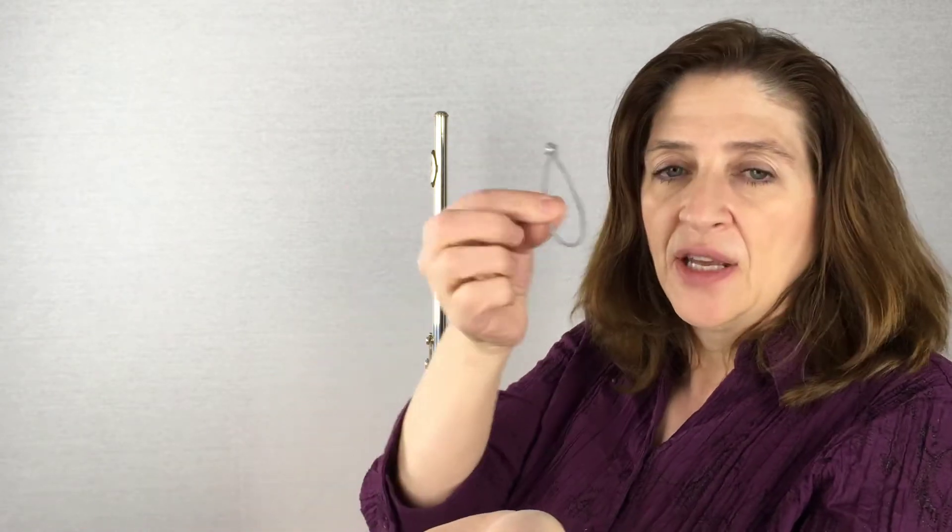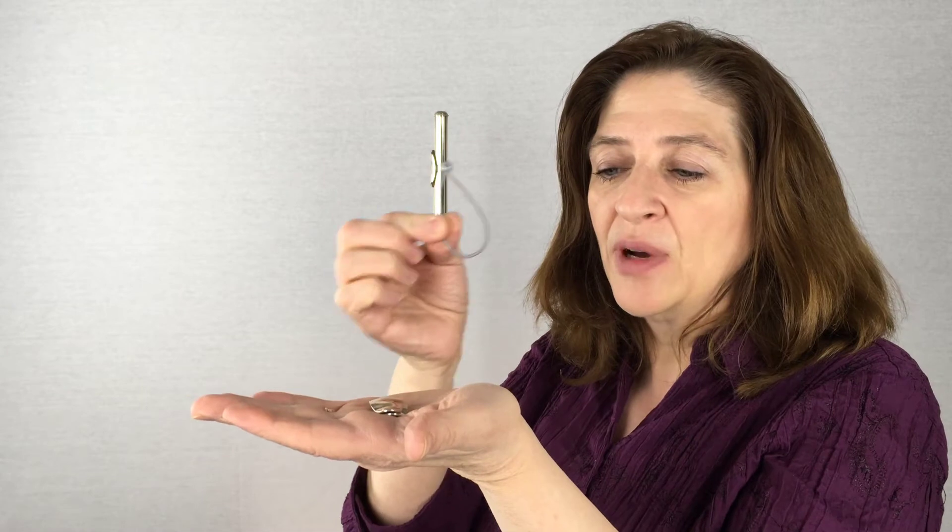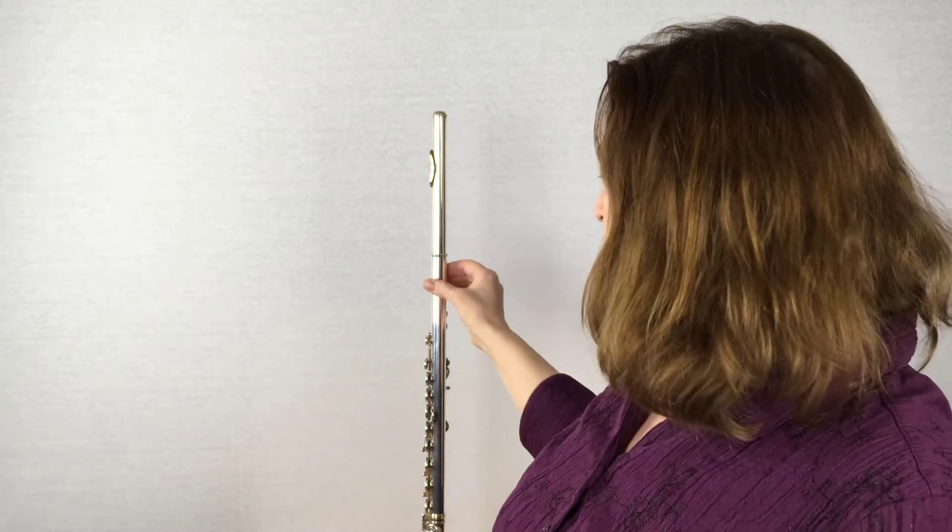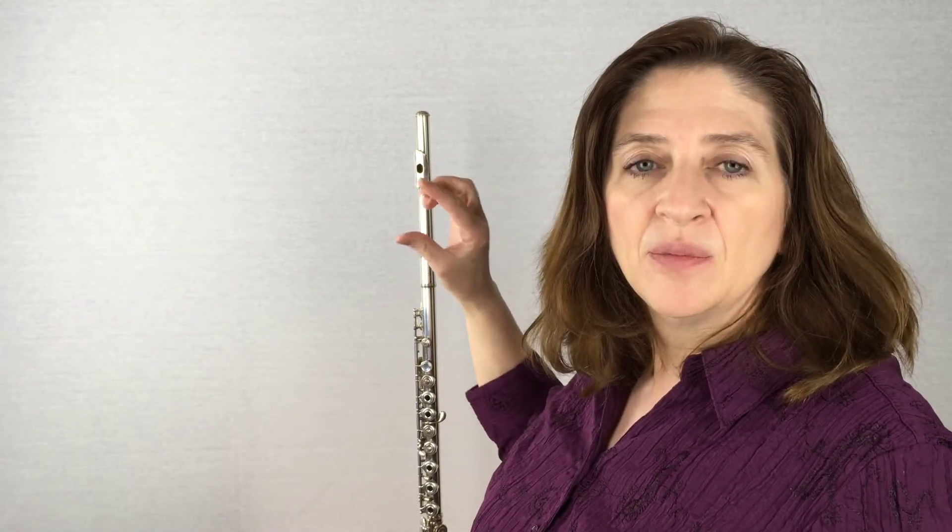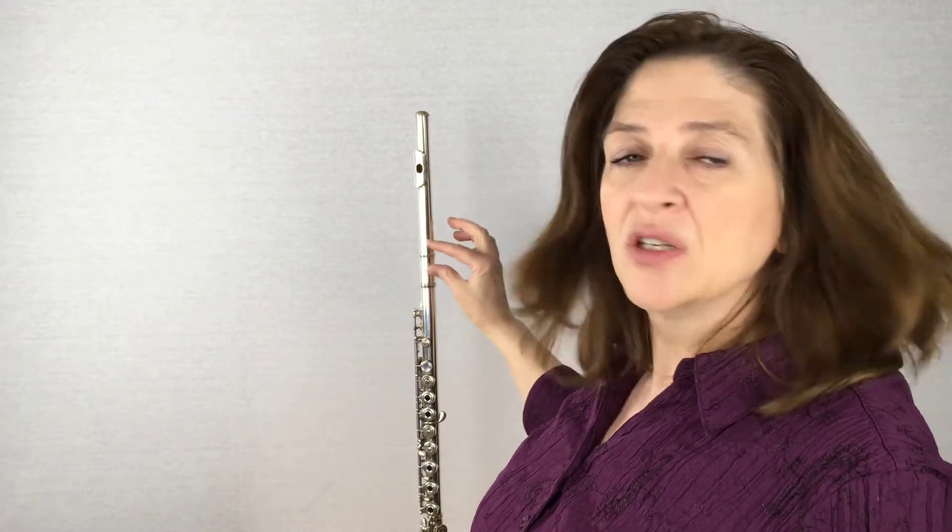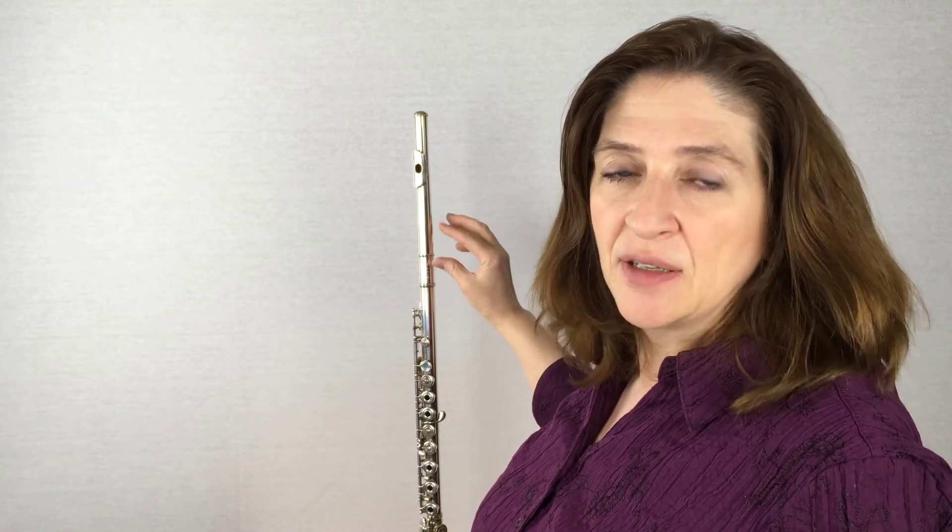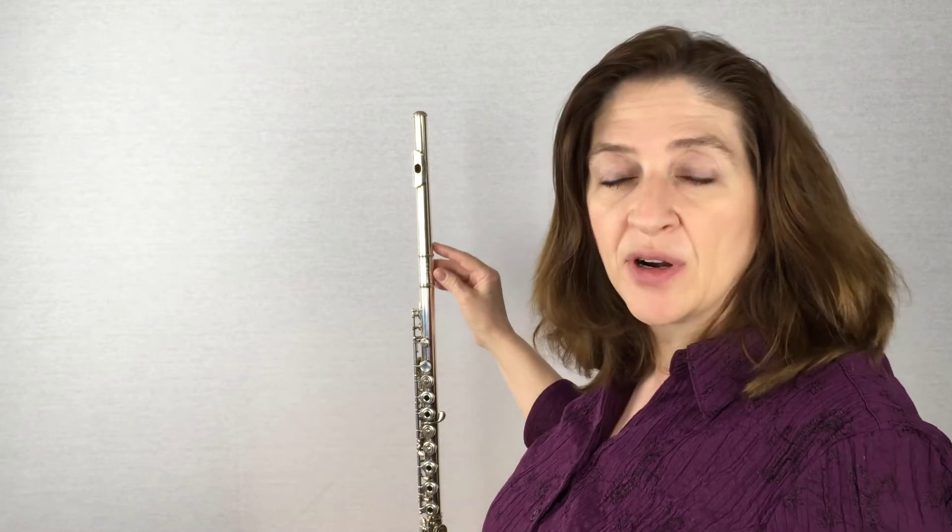And then you take this - this is what's going to attach it to my flute - and you put it here. Now the thing about this, the two pieces, the top and the bottom, need to be bridging the head joint with the body. So I'm going to attach it part on the head joint and part on the body.